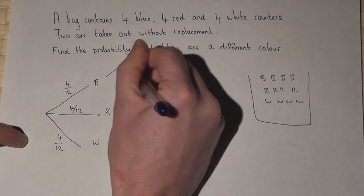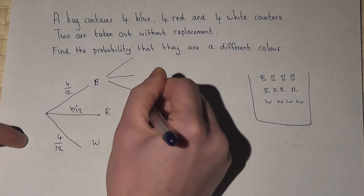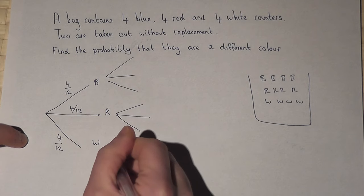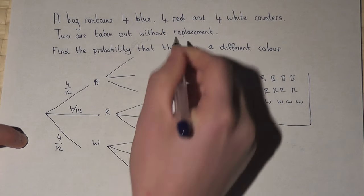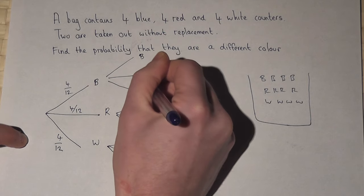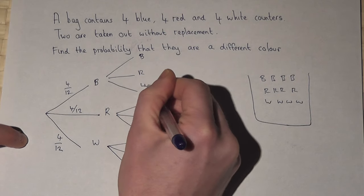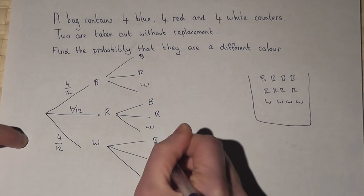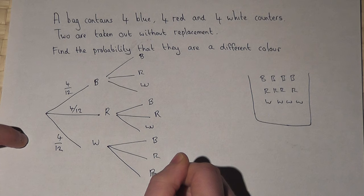When you next pull a counter out then the options repeat. So after a blue could be a blue, red or white, then blue, red, white, blue, red and white.